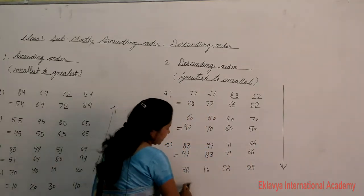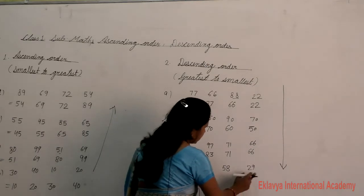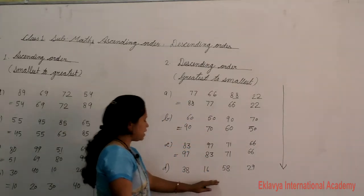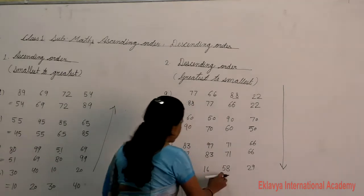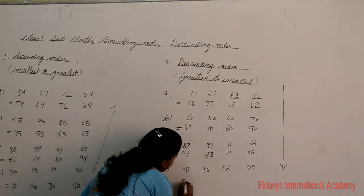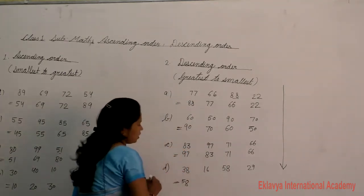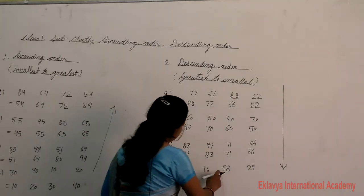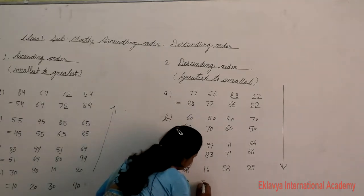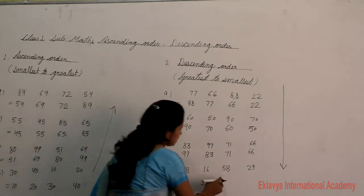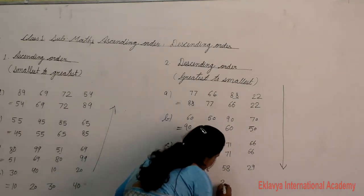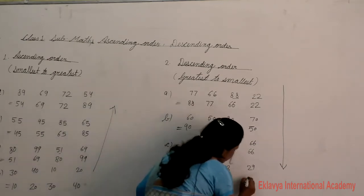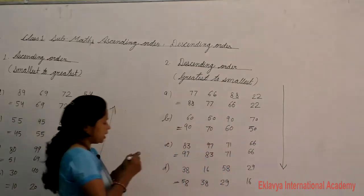Next example: 38, 16, 58, and 29. We choose the greatest number first. The greatest number is 58. After 58 comes 38, then 29, and then 16.